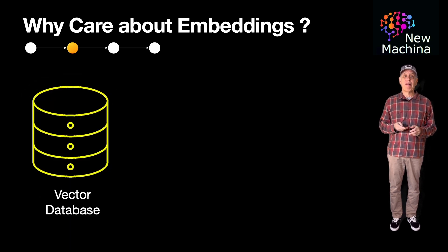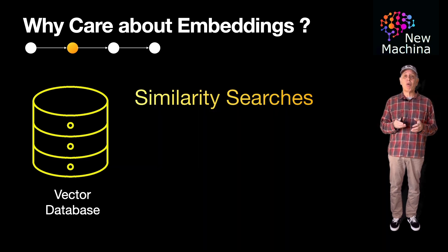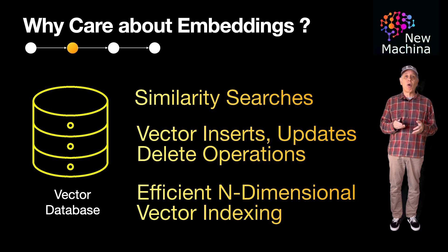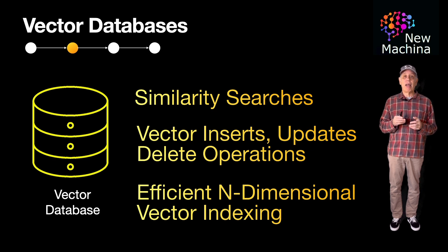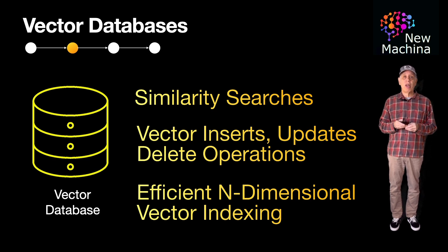But here's the deal: vector databases are optimized for storing vectors and doing the type of vector operations that come with that. Specifically, they are optimized to efficiently handle similarity searches, as well as vector insert, update, and delete operations. They're able to create efficient n-dimensional vector indexes, which enable them to support all of these ML and LLM-driven use cases. In a world with purpose-driven data stores, you want to consider a data store that is optimized for the query patterns in the system use case. Doing this gives you the best performance with optimal operating costs.